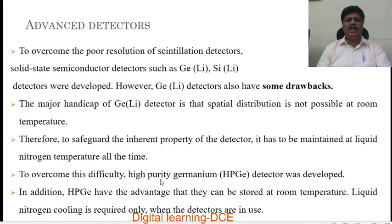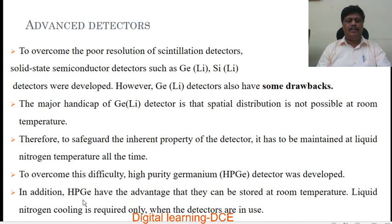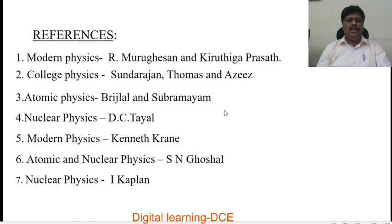These are the advanced detectors. HPGE is mainly used to detect low energy gamma rays, and is now mainly used to detect radium, thorium, and potassium in soil, rocks, and building materials. These are the references used to make the presentation and this video. Thank you for watching.